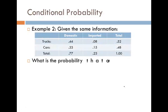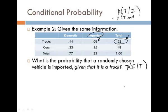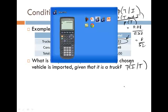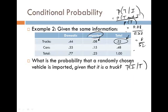Now with the same information: what is the probability that a randomly chosen vehicle is imported, given that it is a truck? That's P(I|T), which is not the same as P(T|I) that we just calculated. Given that it's a truck, those are 52% of all vehicles. We divide the 8% (imported trucks) by 52% (all trucks). So 8 divided by 52 is approximately 15.4%.